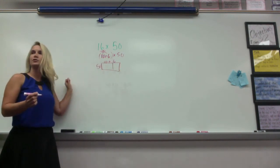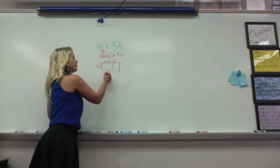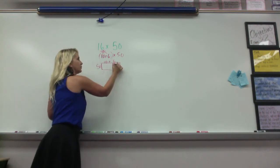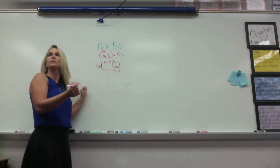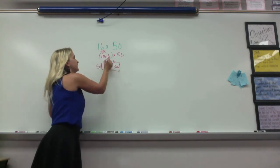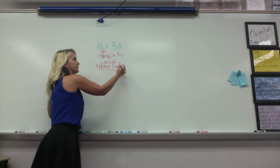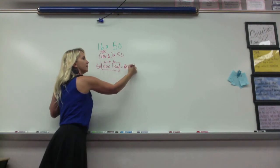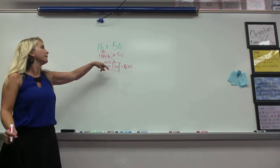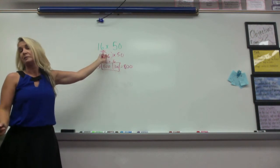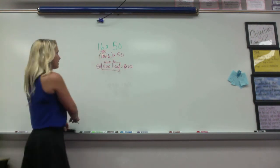So what would your numbers be then? 300 here, and she got 50 times 10 equals 500, and then your total was 800. How many of you did splitting it into expanded form, basically? Just that group? That works.